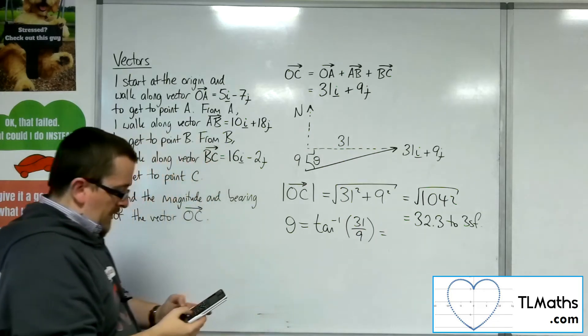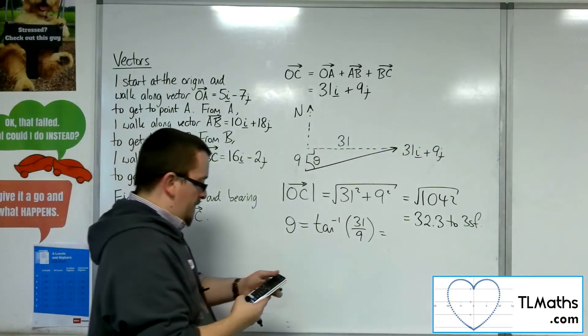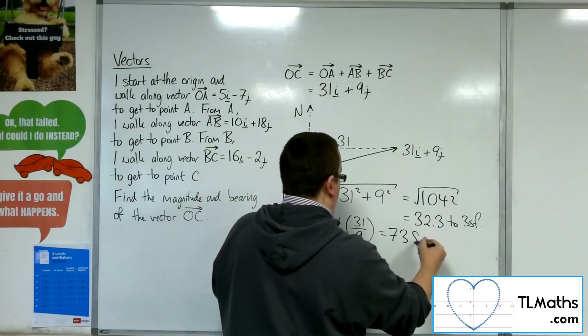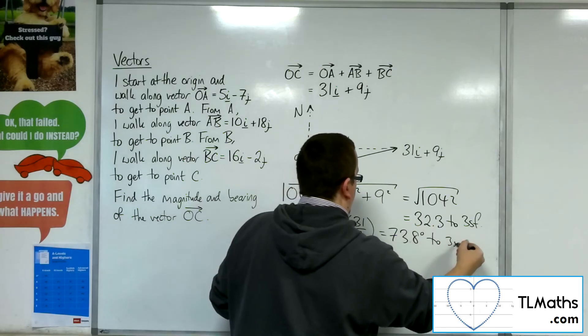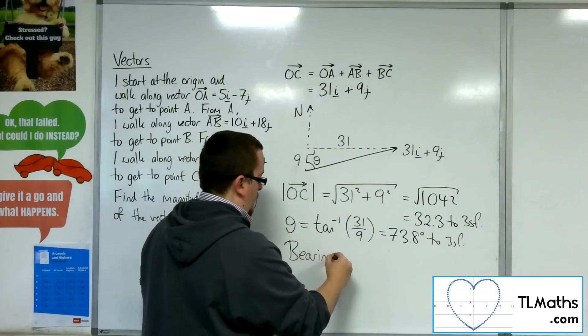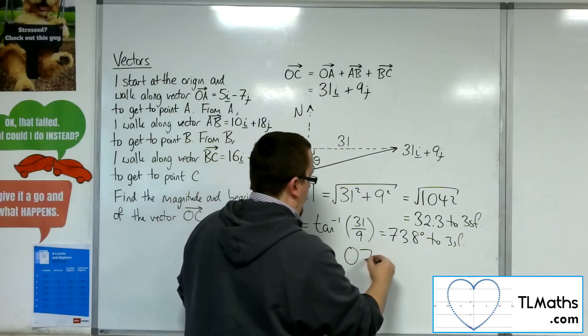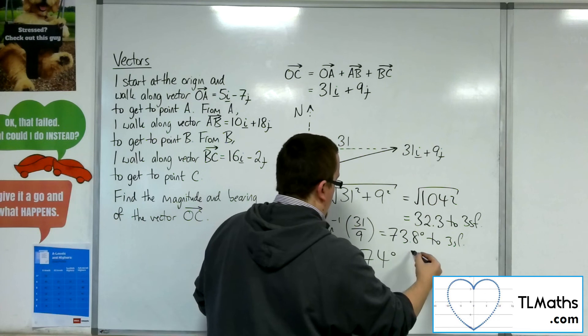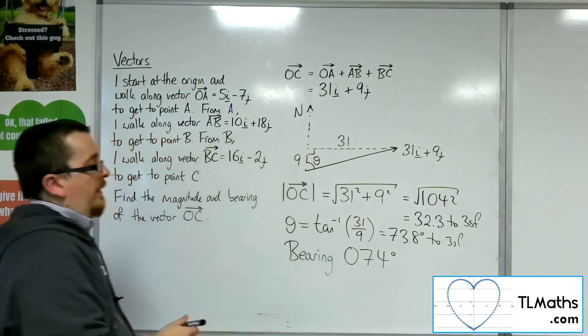So the inverse tan of 31 over 9 is 73.8 degrees to 3 sig fig. So the bearing is 074 degrees to 3 sig fig there.